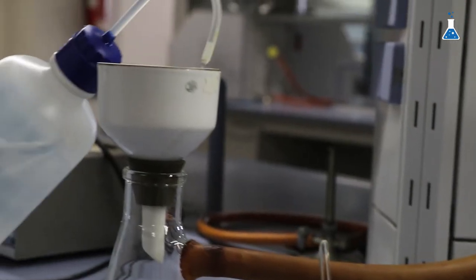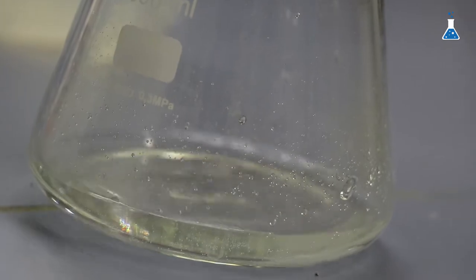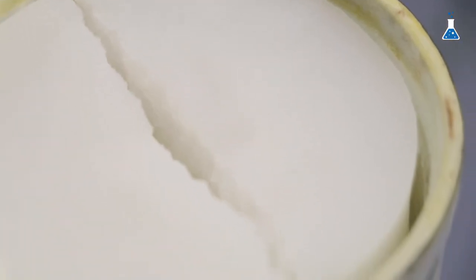Now we are going to filter off the gelatinous precipitate in a Buchner funnel placed in a filter flask, which is connected to the vacuum pump.